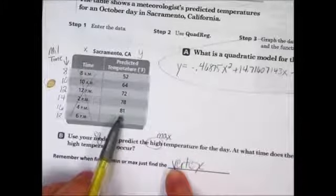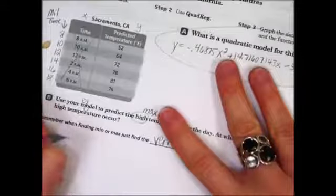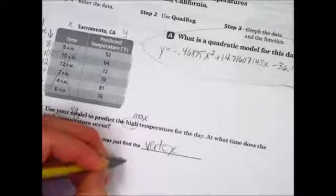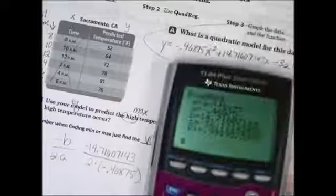Some of you might say, Mrs. Langelli, the highest it gets is 81. No, that's just the highest predicted value. What we need to do is we need to take our equation and do negative B over 2 times A. So negative B is negative 14.71607143 all over 2 times A, and that would be negative 0.46875.